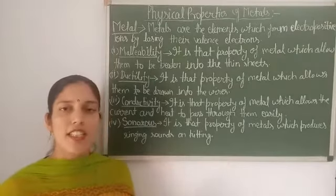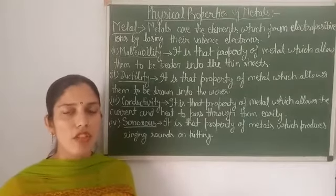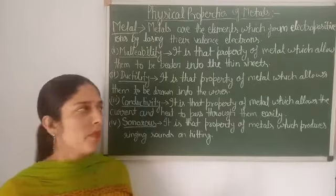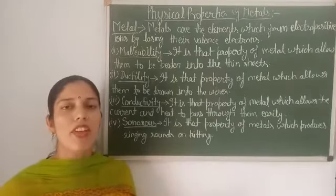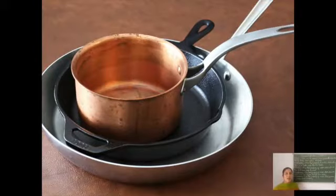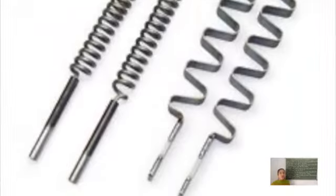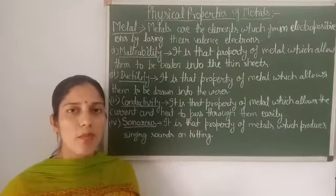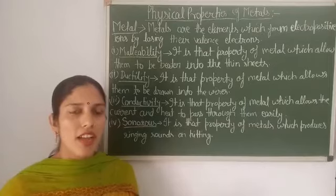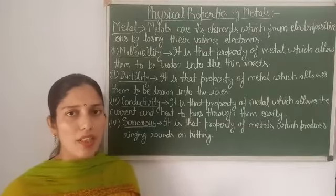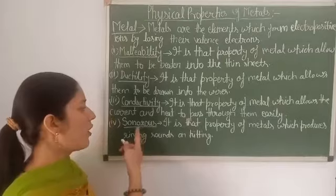The third property of metal is conductivity. It is that property of metal which allows them to pass heat and electricity through them easily. Because of this property, our utensils are made of metals, all heating elements are also made with metals, and the wires used to pass electricity are also made with metal.